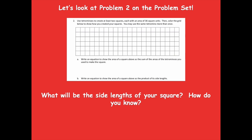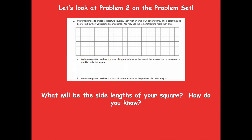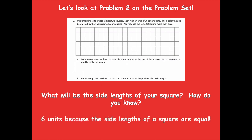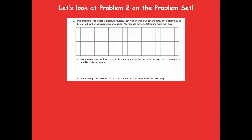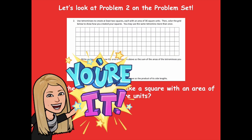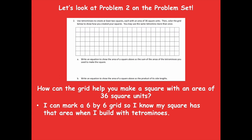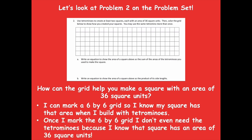What will be the side lengths of your square, and how do you know? Pause the video and think about that. The side lengths of the square would be six units, because six times six equals 36. How can the grid help you make a square with an area of 36 square units? You can mark a six-by-six grid so you know your square has that area when you build with tetrominoes. Or once you mark the six-by-six grid, you know that square has an area of 36.